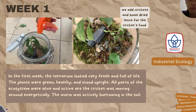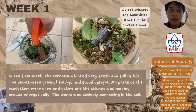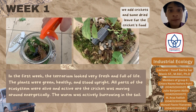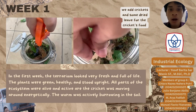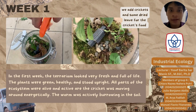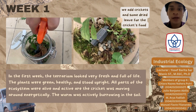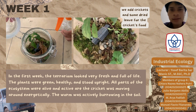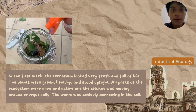The condition of our terrarium at week 1 — it's fresh and thriving. In the first week, the terrarium looked fresh and full of life. The plants were green, healthy, and stood upright. All parts of the ecosystem were alive and active. The cricket was moving around energetically and the worms were actively burrowing the soil. The environment felt balanced, moist, and lively — a sign that the ecosystem was working well.